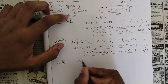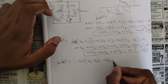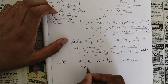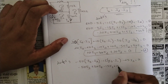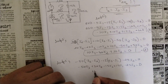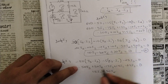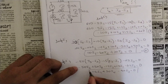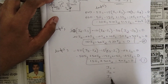Apply KVL on loop 3. Starting from the resistors: minus 50(i3 − i2) minus 15(i3 − i1) minus 25i3 = 0. Expanding: minus 50i3 plus 50i2 minus 15i3 plus 15i1 and grouping all terms: 15i1 plus 50i2, and for i3: minus 50 minus 15 minus 25 = minus 90i3 = 0. Equation 3: 15i1 + 50i2 − 90i3 = 0.